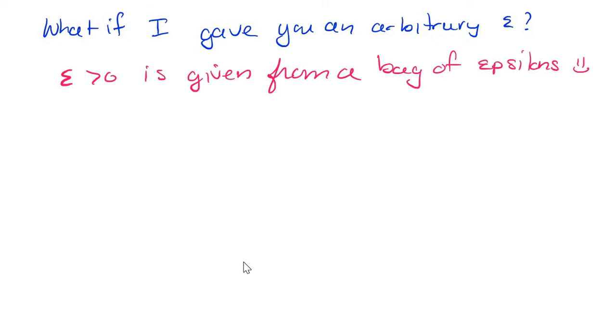So epsilon is given from the bag of epsilons. That's why we say in the proofs - I was always confused, I was an imitator, so I imitated my professors. And they'd write, let epsilon greater than 0 be given. I had no idea why they were doing this, but this is what they were doing.